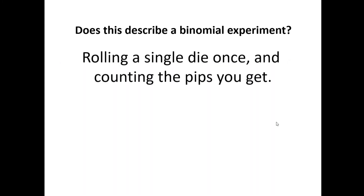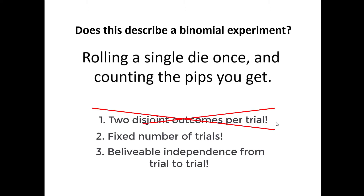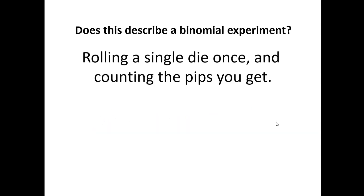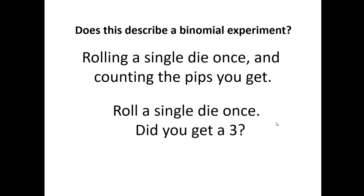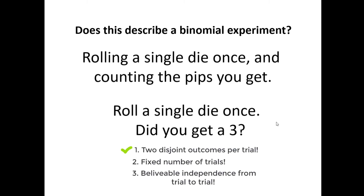Let's roll a single die one time and count how many pips you get. Is that binomial? If you go through your checklist, it fails the first point because there aren't just two outcomes — there are six outcomes. You can make it binomial by simply rolling it once and keeping track of whether you got a three or not, because now there are two outcomes: either you did or you didn't. If you count the number of threes, it's either going to be zero or one. It's a fixed number of trials, and there's no worry about probabilities affecting later trials because there's only one trial. That's a binomial.